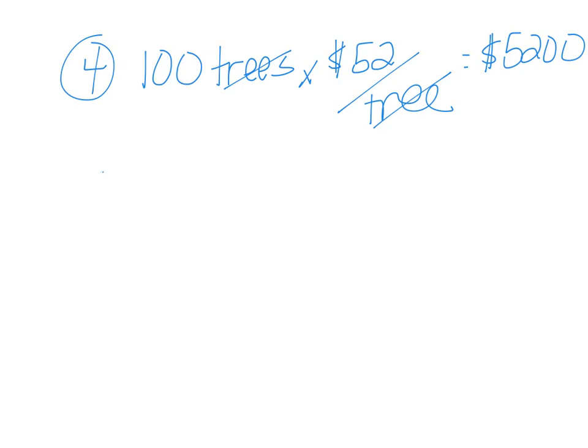Number five, after subtracting the cost of water, calculate the profit that each person will make per year. So we found out at the top of our paper that we wanted to plant two trees per person. And we just found out from number three that it was $52 of cost to water each tree.